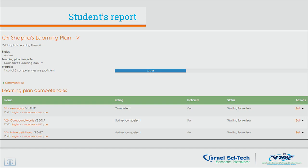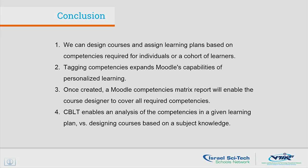I would like to summarize and give some conclusions and open to questions and discussion. We can design courses and assign learning plans based on competencies required for individual or cohort of learners. Tagging competency expands Moodle's capability for personal learning, and this is one of the most important things for us nowadays. Once created, a Moodle competency matrix report will enable the course designer to cover all required competencies. CBLT enables an analysis of competency in a given learning plan versus designing a course based on subject knowledge.